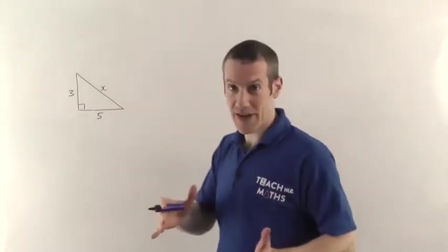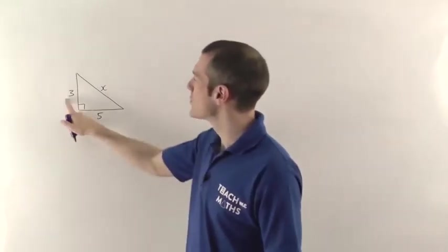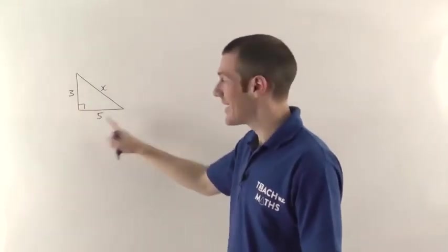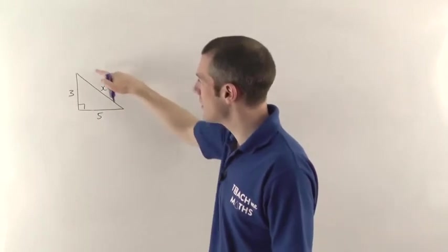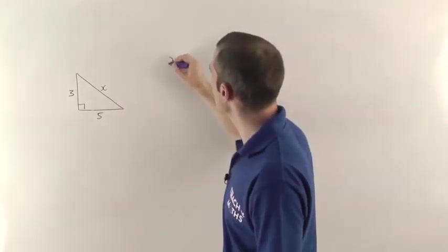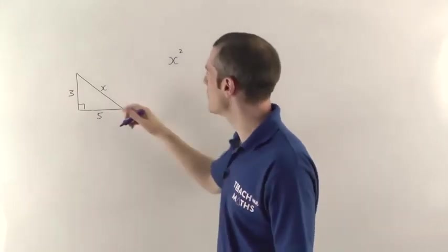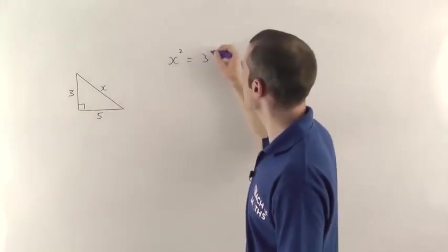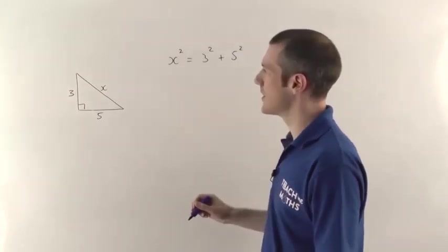So as we saw in Pythagoras' theorem video, you want to square the two shorter sides, add them together, and that will give you the longer side squared. So I could say that x squared, the length of the longest side, is going to be 3 squared plus 5 squared.